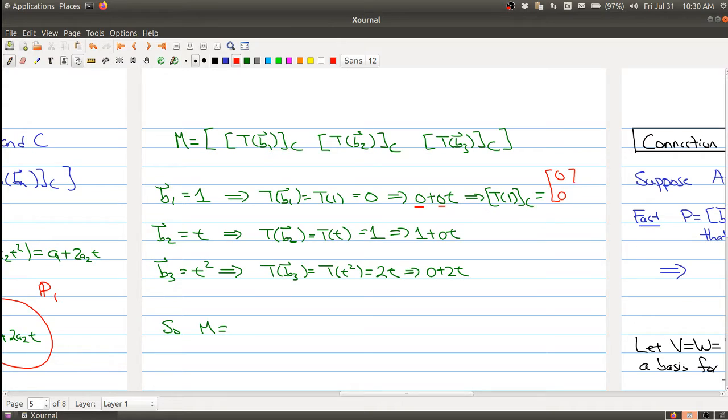So this implies that T(1) with respect to the basis C, these coefficients I want to pull off, 0 and 0. So this is (0, 0). Now let's do T(t) with respect to the basis C. In terms of the basis of P1, it's 1 and 0. So that gives me the vector (1, 0).